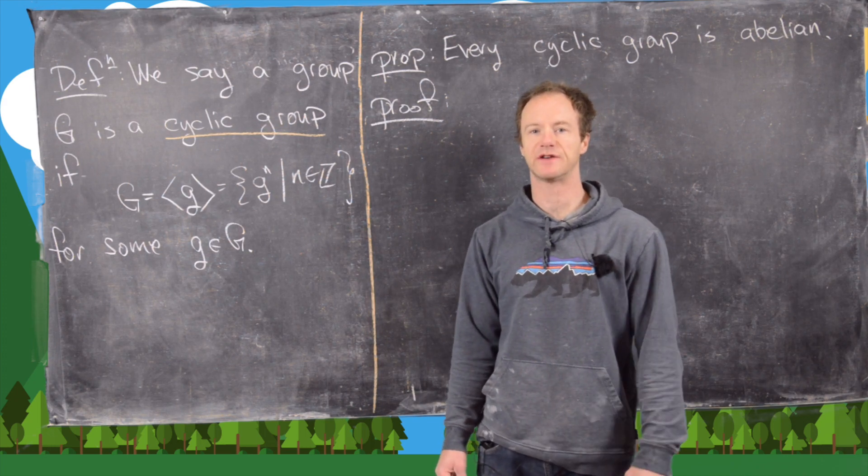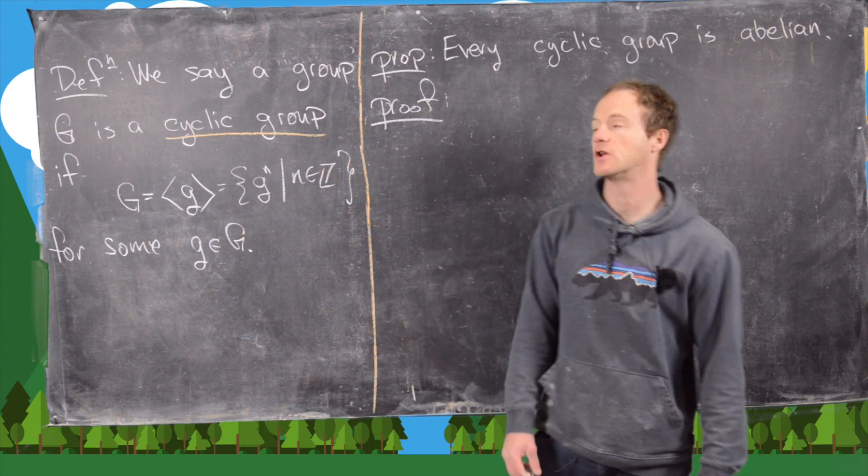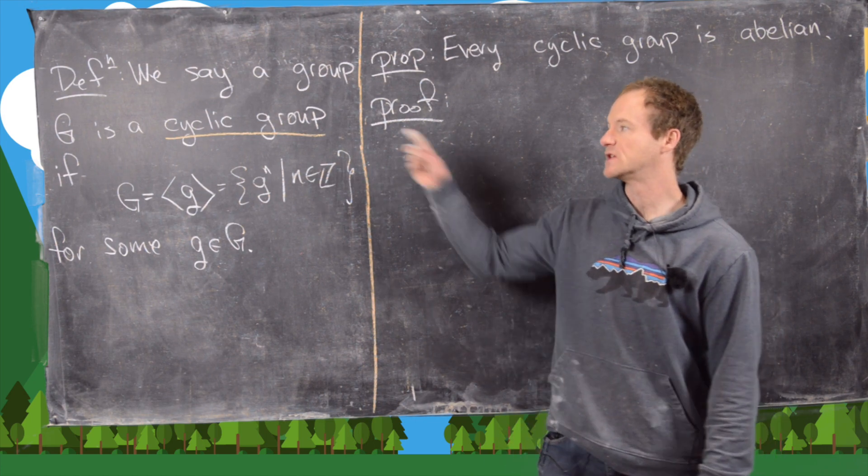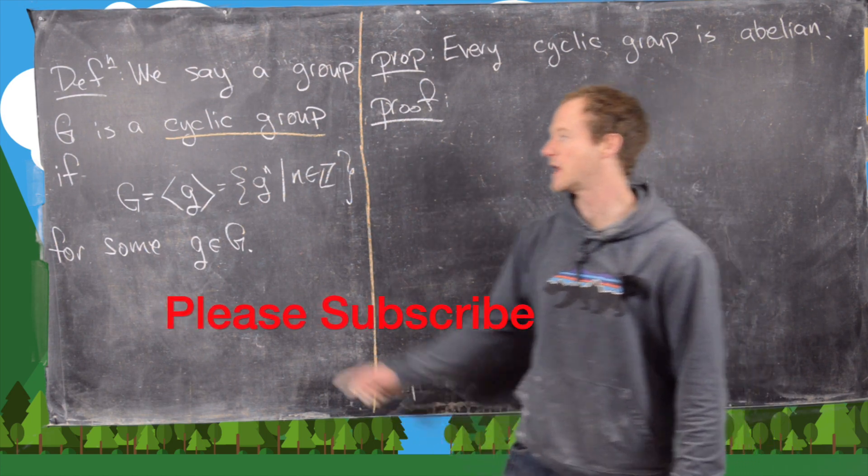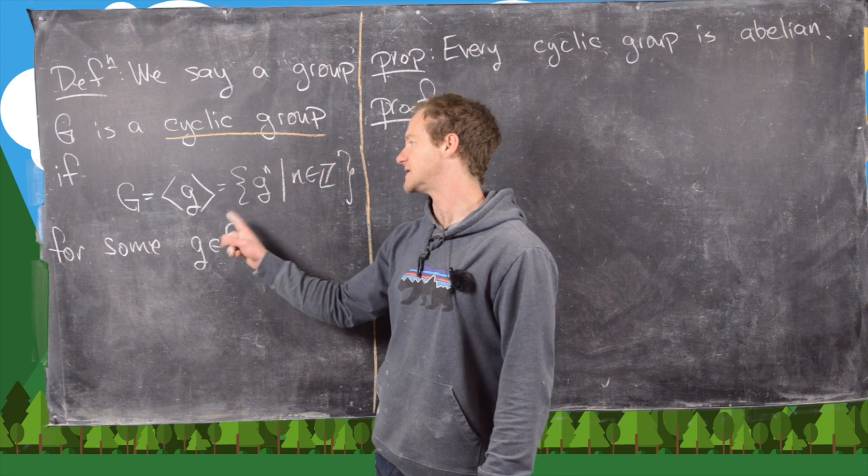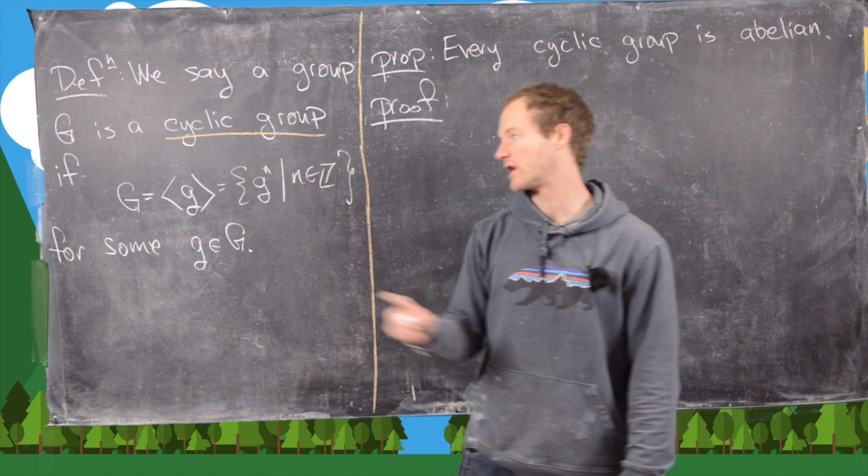In this video we want to extend the notion of a cyclic subgroup and look at the notion of a cyclic group. We say G is a cyclic group if every element in G can be written in terms of a single generator.